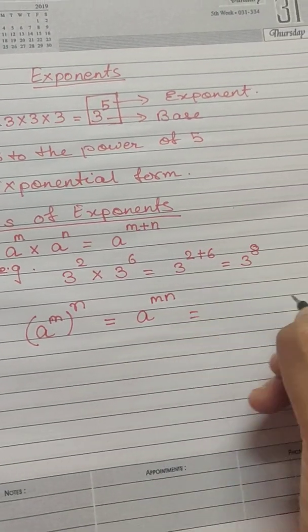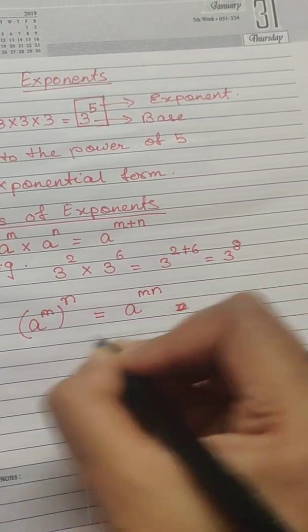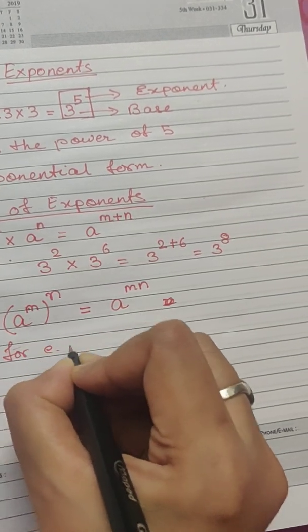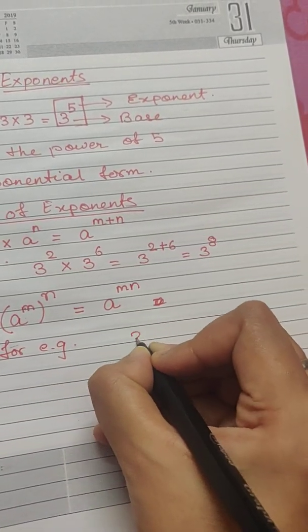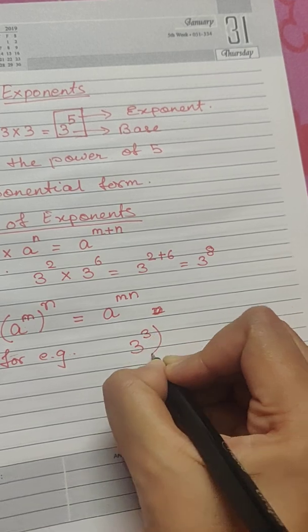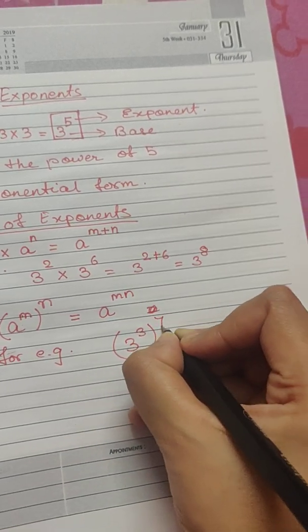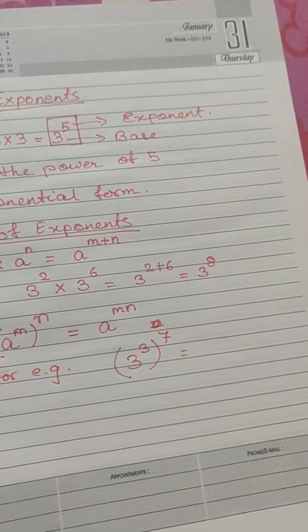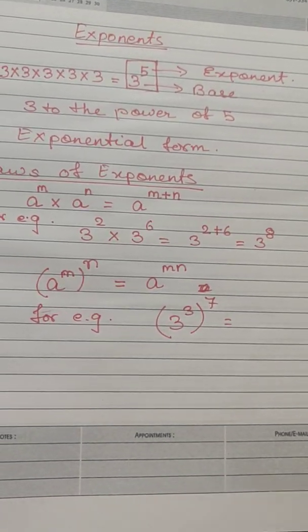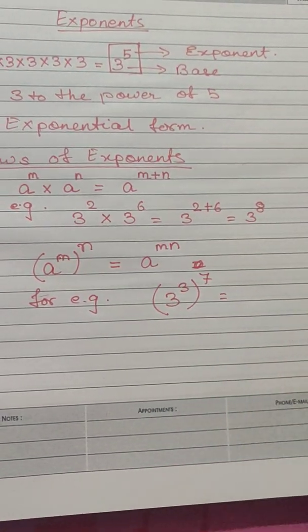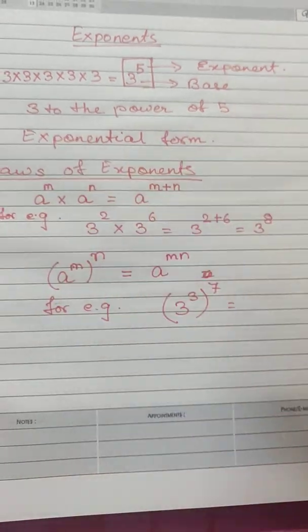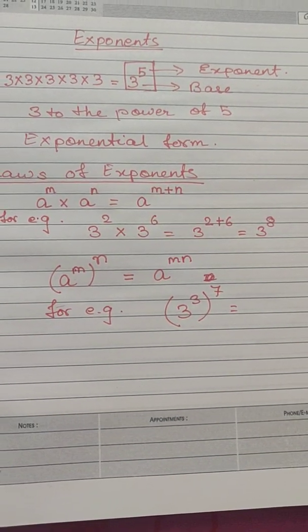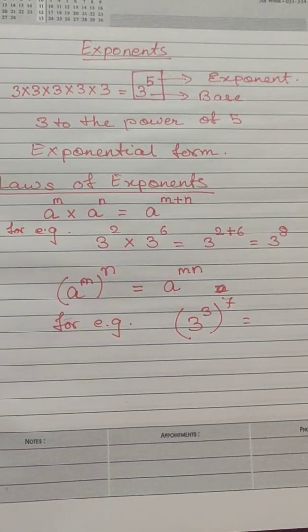For example, let me give you an example. 3 to the power of 3 raised to the power of 7. Now, you can understand that if we go for calculating it in this process of multiplying 3 with itself, it is going to be a huge calculation.